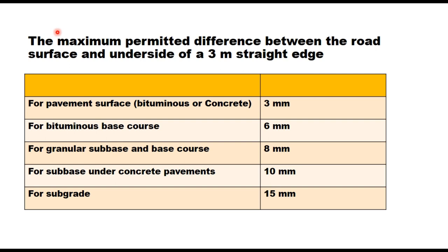The maximum permitted difference between the road surface and underside of a 3 meter straight edge are as follows. For bituminous or concrete surface, it should not be more than 3 mm. For base course, 6 mm. For granular base course and subbase course, 8 mm. For subbase under concrete pavement like DLC and roller compacted concrete, 10 mm. And for subgrade, it can be a maximum of 15 mm.